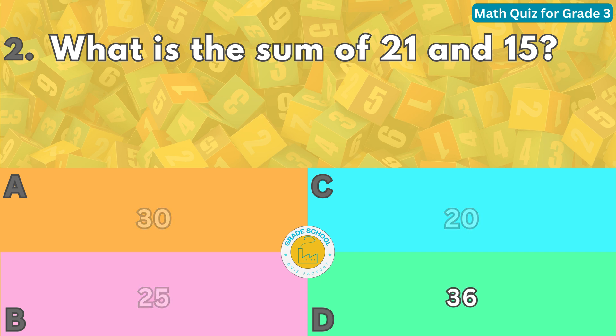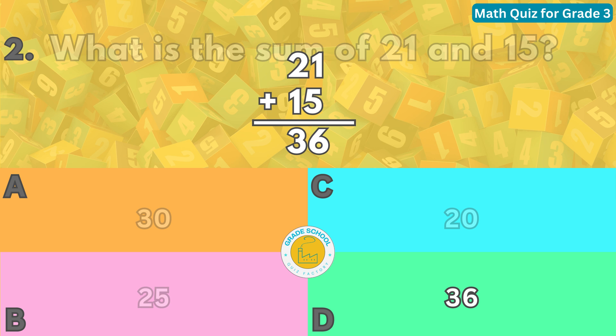To find the sum, we add the two numbers together. When we add 21 and 15, we get a sum of 36.